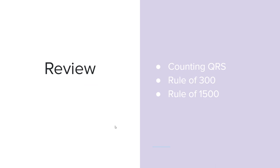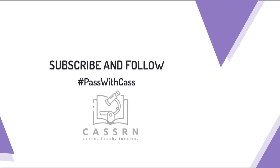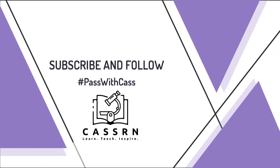Quick review: For the QRS method, ensure you have a six-second strip — five boxes six separate times, each group equaling one second — then count QRS complexes and multiply by 10. The rule of 300: choose two QRS complexes, count the big boxes between them, and divide 300 by that number. The rule of 1500: choose two QRS complexes and count the small boxes between them. Each smaller unit of measurement gives a more accurate result. Thanks for tuning in — please help me grow my channel by clicking subscribe and follow.